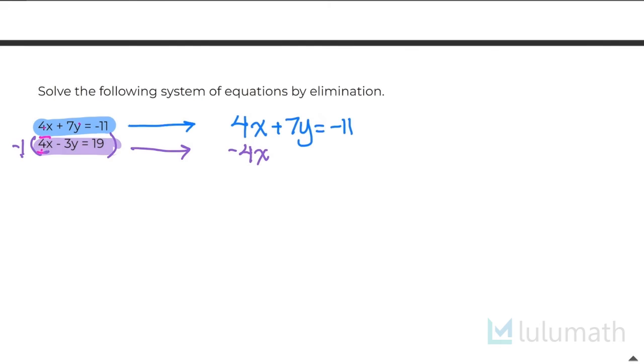And then negative 1 times negative 3y ends up being positive 3y. Now, make sure if you do this, you do this to every single term in your equation, both sides of your equation. And then negative 1 times 19 is negative 19.